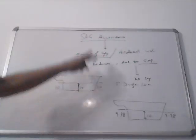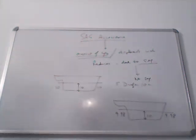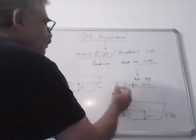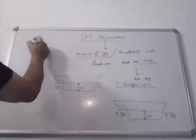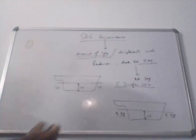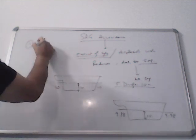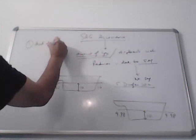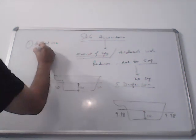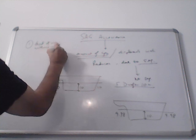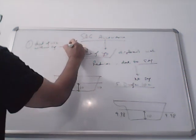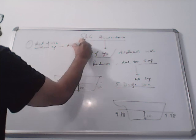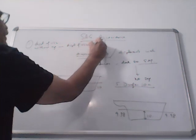So there are two ways to calculate SAIC Allowance. Summer draught 10 meters. The first method is the difference, or the displacement of vessel without SAIC minus displacement of vessel with SAIC.